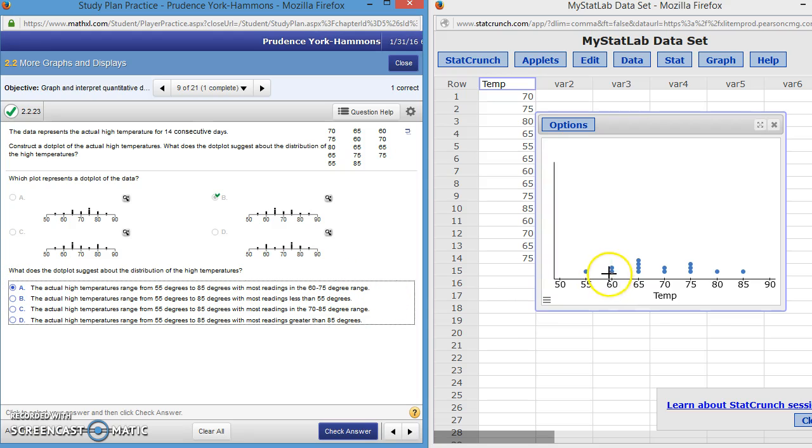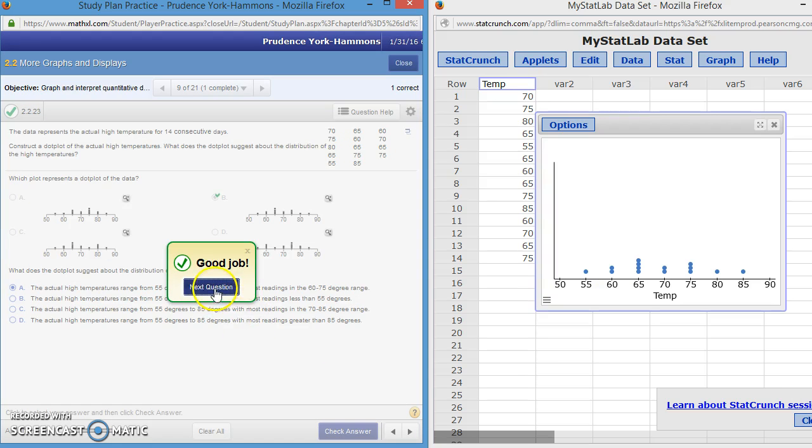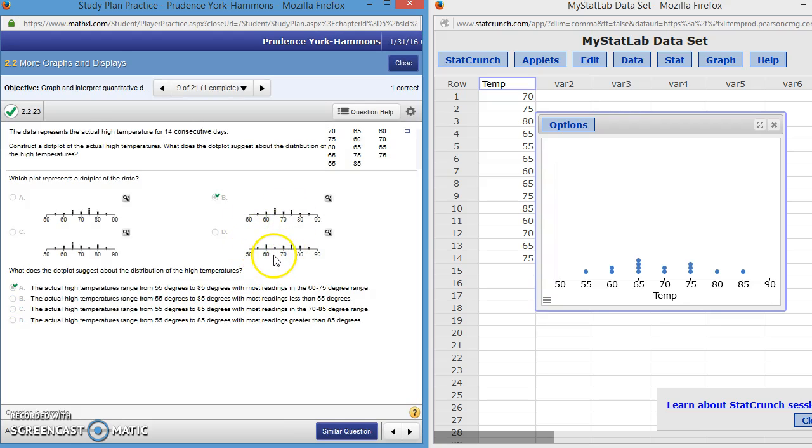And you could see that over half, most of our temperatures, we counted them, 11 of our temperatures were in the 60 to 75 degree range. So let's check our answer. It says good job. And we could move on to the next question. I hope this has helped to show you how you could match up the graphs so that we can go back to the same question, how to check the graphs and match them up. Thank you for your time.